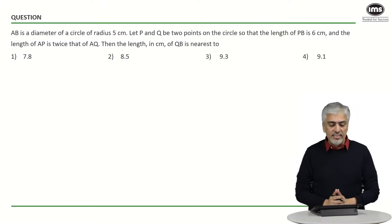Here they are telling us AB is the diameter of a circle of radius 5, so AB is obviously 10. P and Q are two points on the circle such that PB is 6 and the length of AP is twice of AQ. They have not told us where P and Q are but they have just told us that they are on the circle.